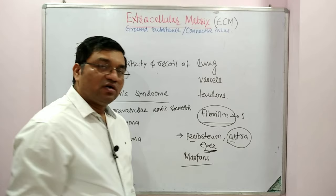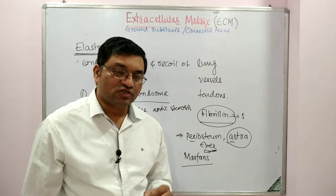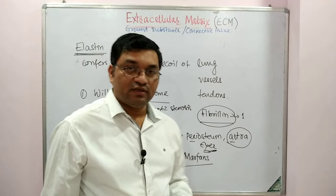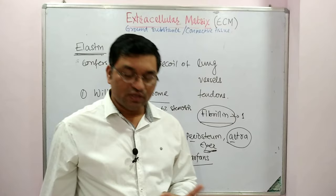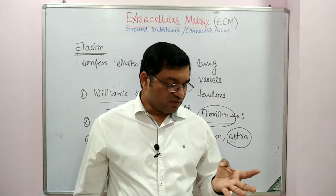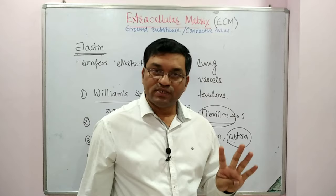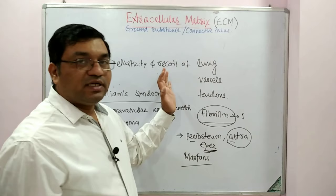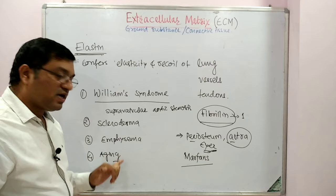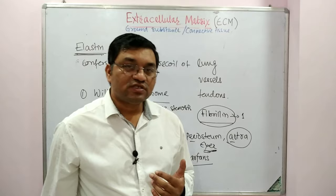So the fibrous structural components of extracellular matrix are collagen, elastin, and fibrillin. Disorders related with collagen include osteogenesis imperfecta, Ehlers-Danlos syndrome, Alport syndrome, Menkes disease, scurvy, and epidermolysis bullosa. Disorders related with elastin include Williams syndrome, scleroderma, emphysema, and aging. Fibrillin is associated with Marfan syndrome, which is due to a defective gene for fibrillin-1.